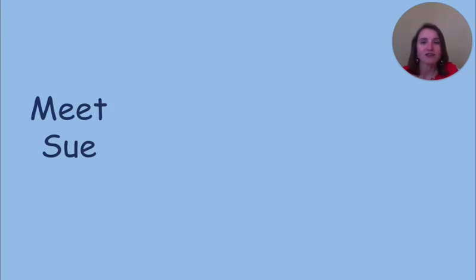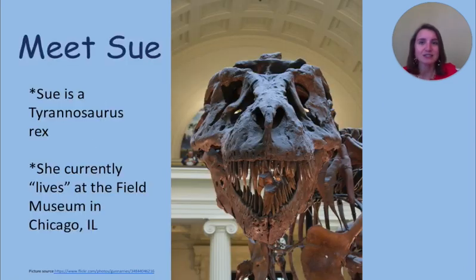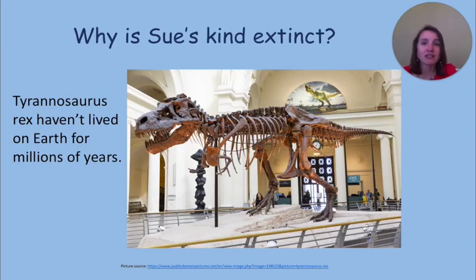First, I want to introduce you to someone very special to me named Sue. I want you to close your eyes and visualize what you think Sue looks like. Were you picturing a lady, probably in her 60s, playing piano? That's not Sue — that's my mom. This is Sue. Sue is a Tyrannosaurus rex and is one of the most famous fossils in the world. She is currently on display at the Field Museum in Chicago, Illinois. T-rex haven't lived on earth for millions of years. Today, we are going to discover why that is. In order to find out that answer, we first need to review food chains and food webs.